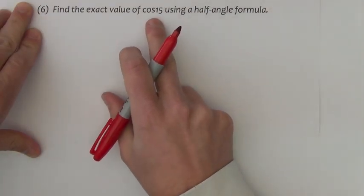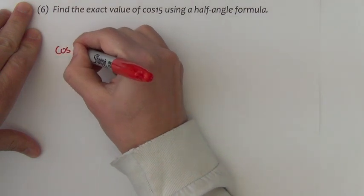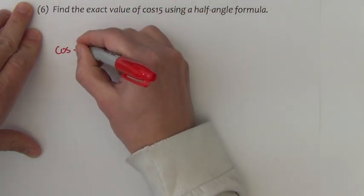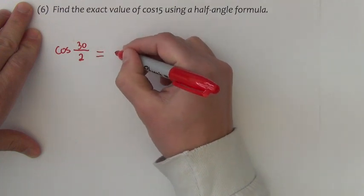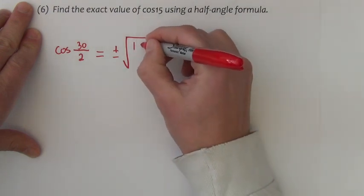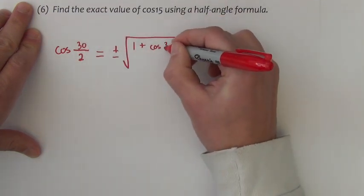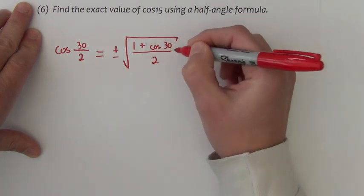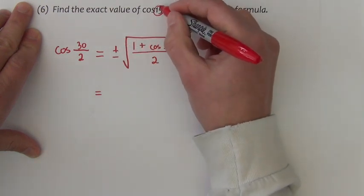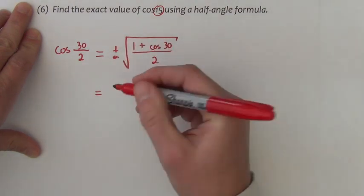Next problem says find the exact value of cosine 15 degrees using a half angle formula. Cosine of something over 2. I want something such that when we divide by 2 we get 15. We'll use 30 divided by 2 equals formula plus or minus big square root 1 plus cosine of whatever angle this is. I'm going to use 30 over 2. The plus and minus depends on where this is. In quadrant 1 all angles are positive, so it's not going to be negative. I'm just going to drop that.